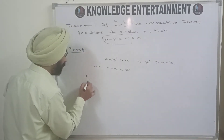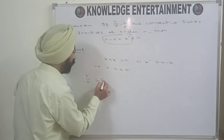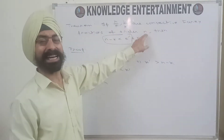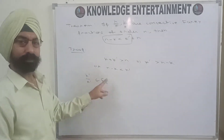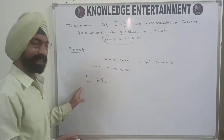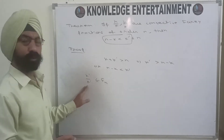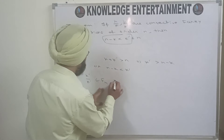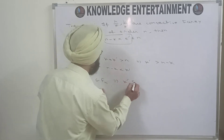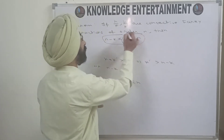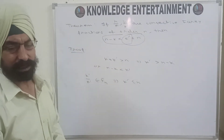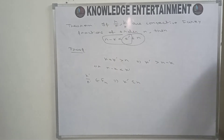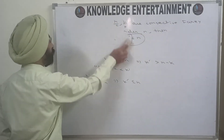Secondly, h'/k' belongs to F_n since it is a Farey fraction of order n. If a Farey fraction belongs to F_n, then its denominator is less than or equal to n. So k' is less than or equal to n, which means this part is also true. This completes the proof of the first, very easy theorem.